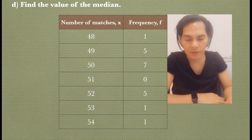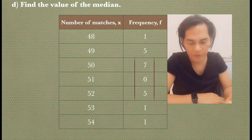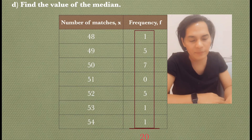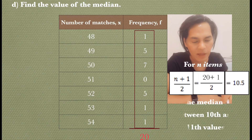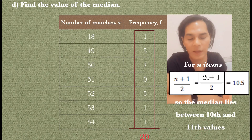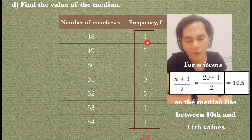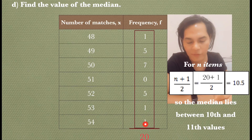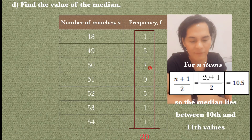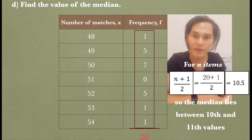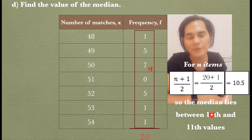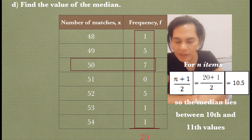Next is the median. The total number of frequencies is 20. For n items, use (n+1)/2, so (20+1)/2 = 10.5. The median lies between the 10th and 11th values. Look at the frequency column and add them up: 1+5+7 = 13. Before reaching 13, we pass through positions 10 and 11. Alternatively, 1+1+5+7 = 14, and before reaching 14 we also have positions 10 and 11. Therefore, our median is 50.